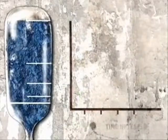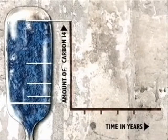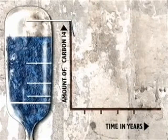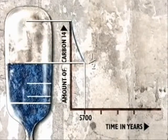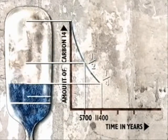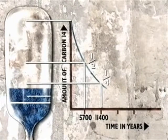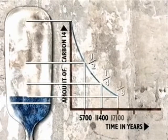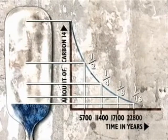It would take another 5,700 years for it to decay by half again, and again, and again. If we plot the half-life as a graph — with the amount of carbon-14 on the vertical axis and time on the horizontal axis — it will look like this. Using the half-life graph, scientists can carbon date the mummy.